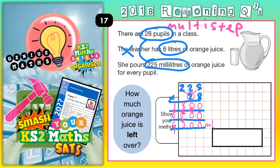Now we need to figure out how much juice is left over. The next thing to notice is we've got different units — this is in millilitres, but how much juice the teacher started with is in litres. Don't forget that 1 litre is 1,000 millilitres. So 2 litres is 2,000 millilitres, 3 litres is 3,000 millilitres, and 8 litres is 8,000 millilitres.